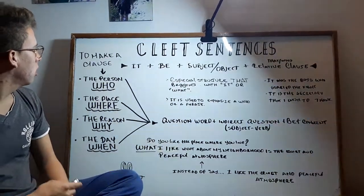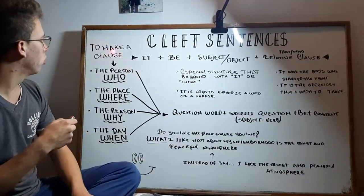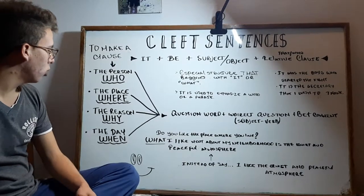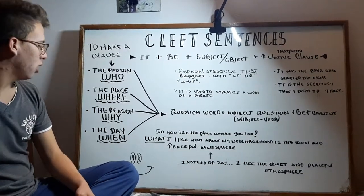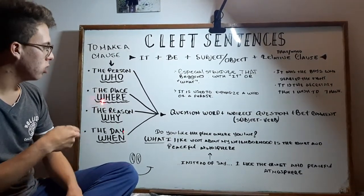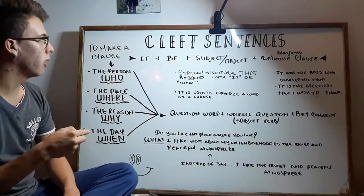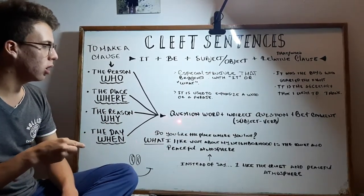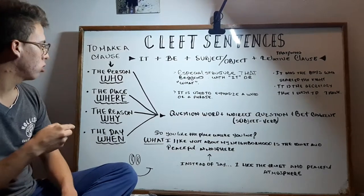Now I'm going to explain the 'what' cleft. To make a clause we use: the person 'who,' the place 'where,' the reason 'why,' and the day 'when.' We can use these in the cleft sentence using 'it' and using question words.